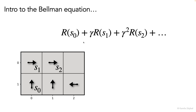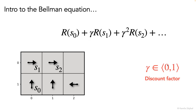Now, this expression sums up all the rewards that the agent receives as he moves over the environment. But there's one catch: the future rewards are discounted in some way using this discount factor gamma. So this discount factor gamma is a number between zero and one. We often choose it to be around 0.9. And notice that if gamma is zero, then future rewards don't matter at all.